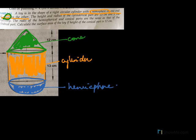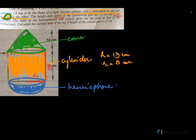The height and radius of the cylindrical part are 13 and 5. So the height of the cylindrical part is 13, and the radius is 5.